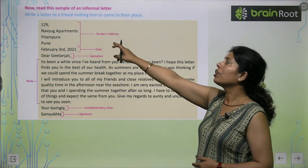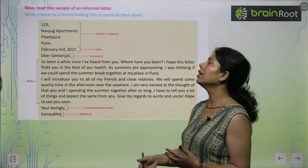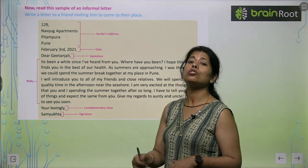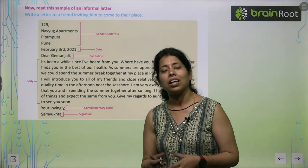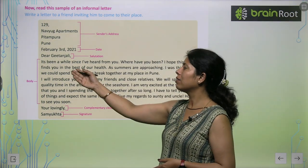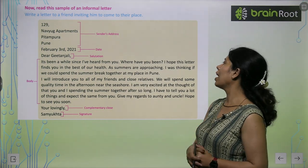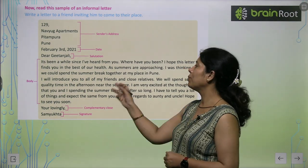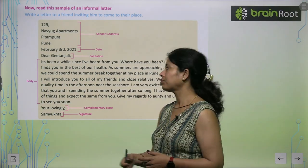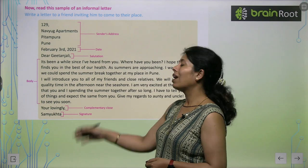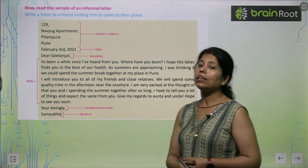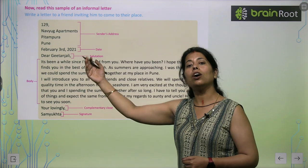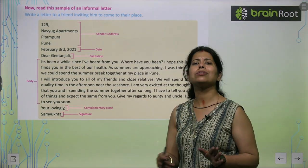Now read this sample informal letter. Write a letter to a friend inviting him to come to your place. First, write your own address where you are sending from, then the date, then the salutation, then greet the recipient. Then the body - write your subject matter, such as: 'It has been a while since I have heard from you. I hope this letter finds you in the best of health. As the summer is approaching, I was thinking if you could spend a summer break together at my place in Pune.' Then close with 'Yours lovingly' and your name and signature.